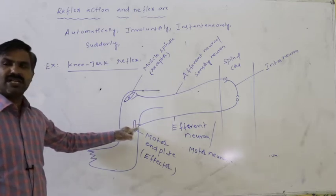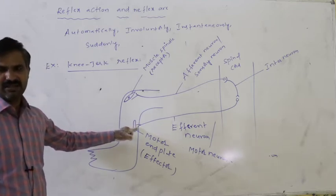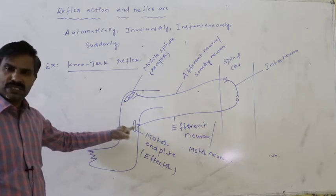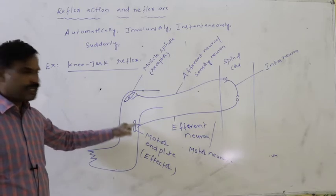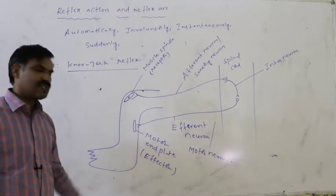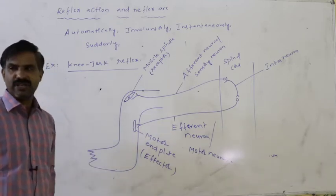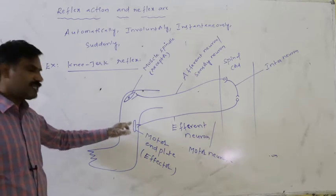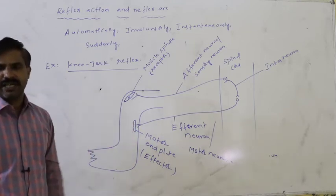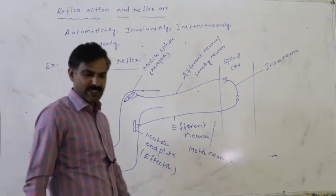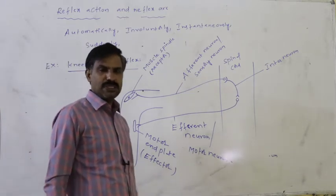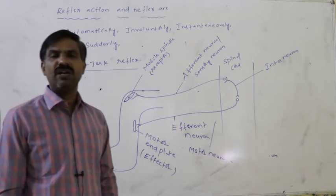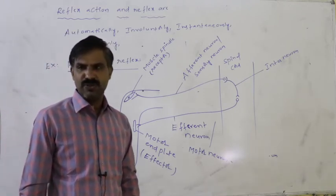The efferent motor neuron terminates on several sarcomeres — that unit is said to be the motor end plate, which is the effector. In response, the muscle contracts and the person moves the leg away from the foreign or pointed object.